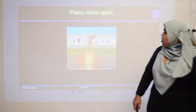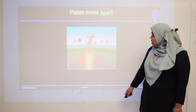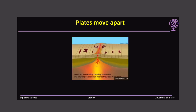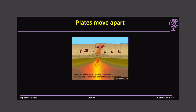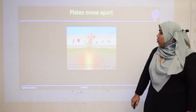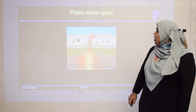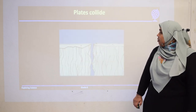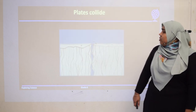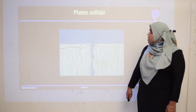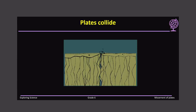From this video, you can see two plates moving apart, and energy is being released from the middle. From the inner core, the energy rises to the top crust of the Earth. And from this video, you can see two plates colliding with each other.